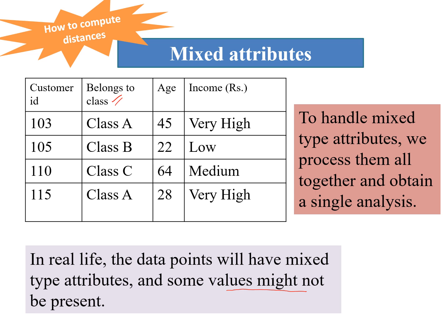Then we have the numeric, age and income which is an ordinal type of attribute. So to handle mixed attributes, we process them all together and obtain a single analysis.